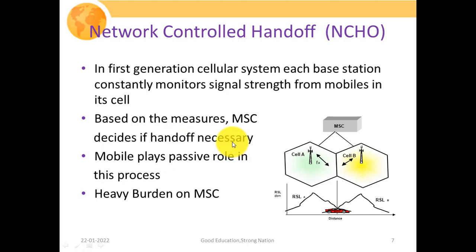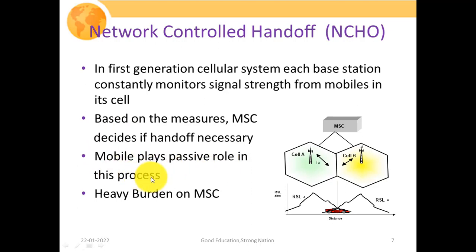The received signal strength input gives information to the MSC about whether the signal is capable enough to handle the call properly. Depending on those inputs, the MSC decides whether handoff is necessary. In this situation, the mobile plays a passive role since all computation and the handoff process is initiated and maintained by network devices only. This puts a heavy burden on the MSC, as it has to monitor the received signal strength of individual users.